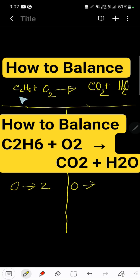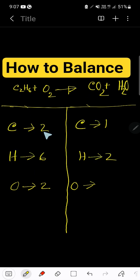How to balance this combustion reaction of C₂H₄ plus oxygen to form carbon dioxide and water. On the left-hand side we have 2 carbon atoms, 6 hydrogen atoms, and 2 oxygen atoms.